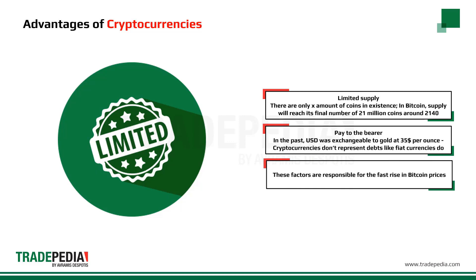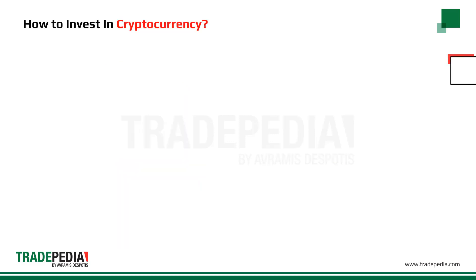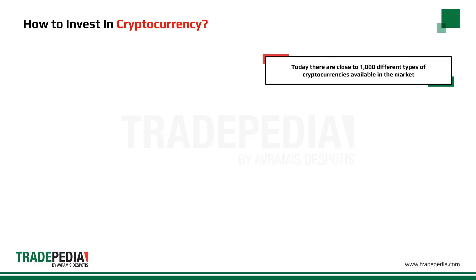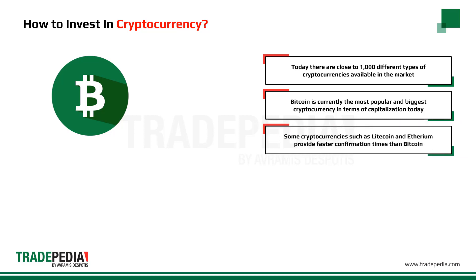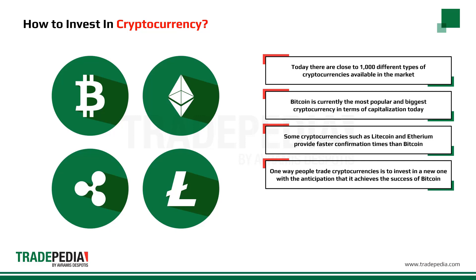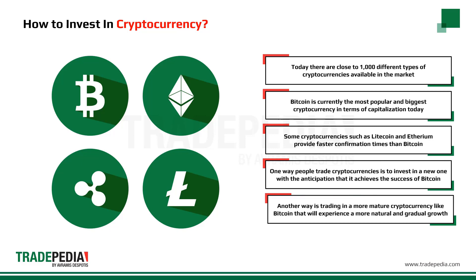These factors are responsible for the fast rise in Bitcoin prices. Today, there are close to 1,000 different types of cryptocurrencies available in the market. Bitcoin is currently the most popular and biggest by market capitalization. Different cryptocurrencies provide different benefits — some, such as Litecoin and Ethereum, provide faster confirmation times than Bitcoin. One way people trade is to invest in a new cryptocurrency anticipating it achieves Bitcoin's success, but this is very risky. Another way is trading in a more mature cryptocurrency like Bitcoin, which may experience a more natural and gradual growth.